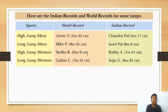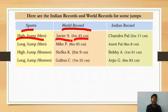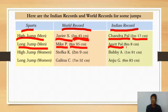Here are the Indian records and world records for jumps. For men's high jump, the world record is 2 metres 45 centimetres, achieved by Javier S. The Indian record is 2 metres 17 centimetres, achieved by Chandrapal. For long jump, Mike P achieved a world record of 8 metres 95 centimetres, and the Indian record is by Amrit Pal at 8 metres 8 centimetres. You can pause the video and observe this data for women's high jump and long jump as well.